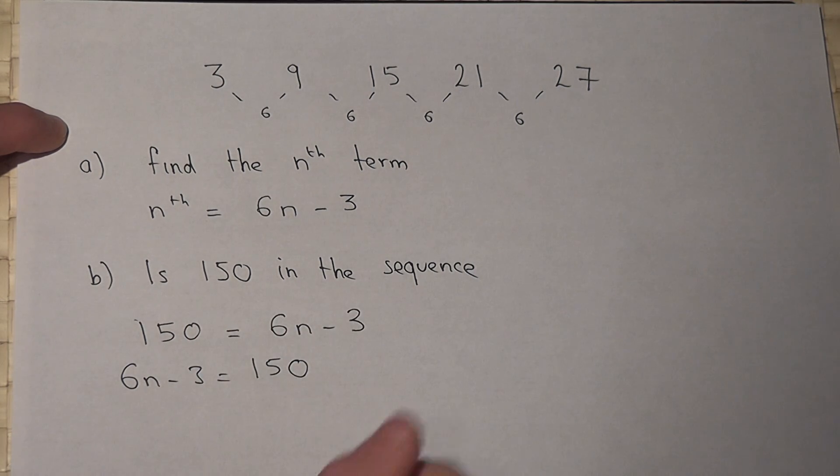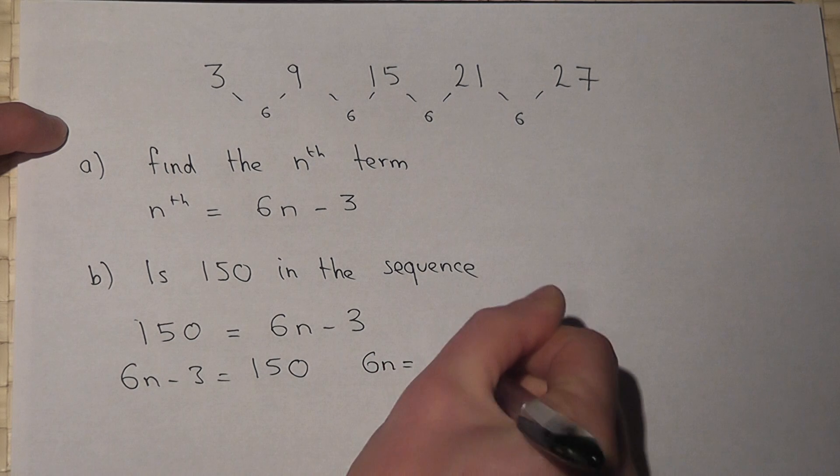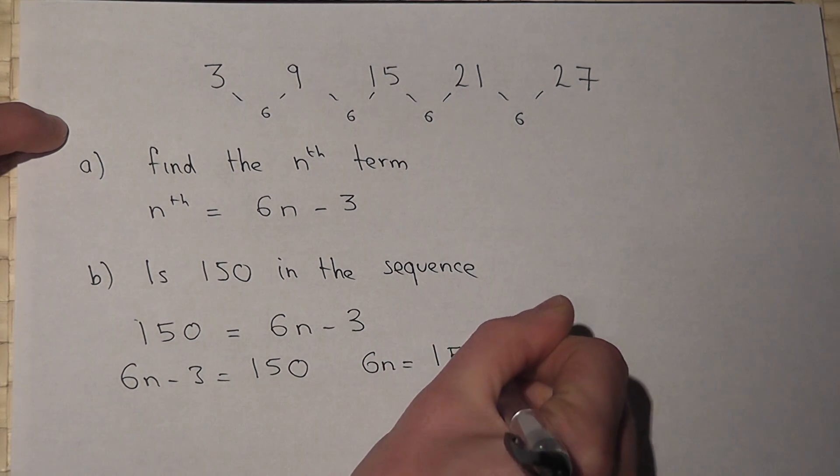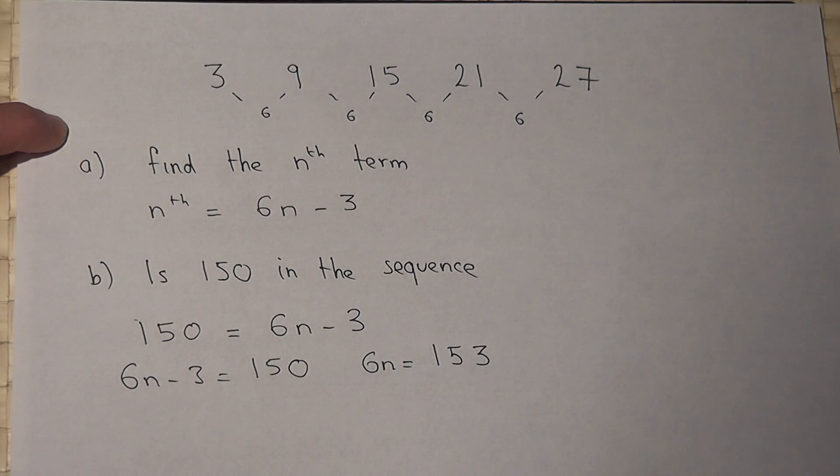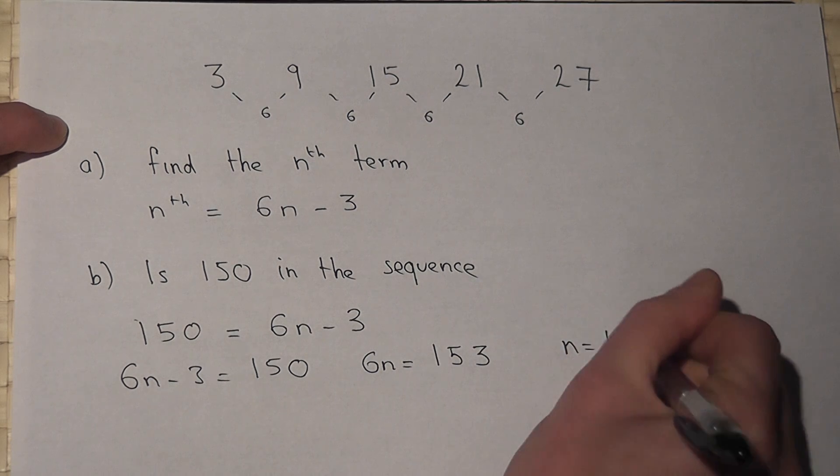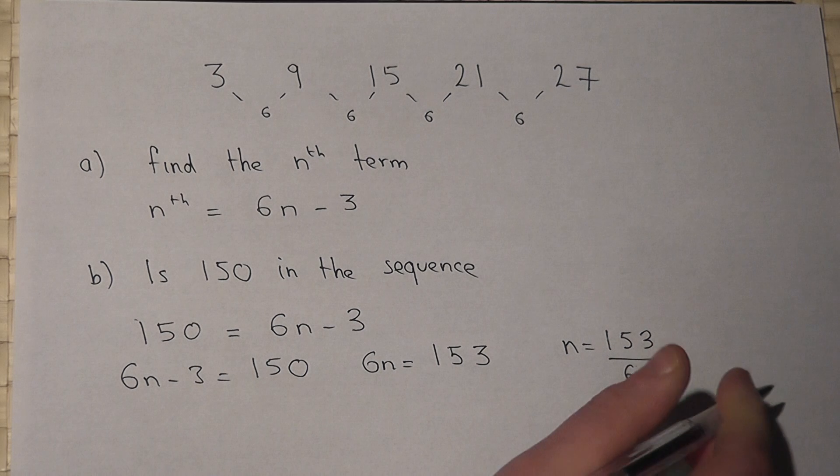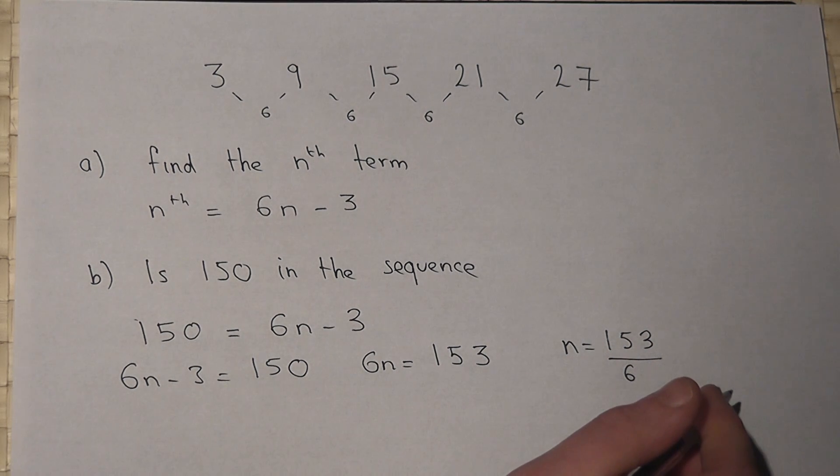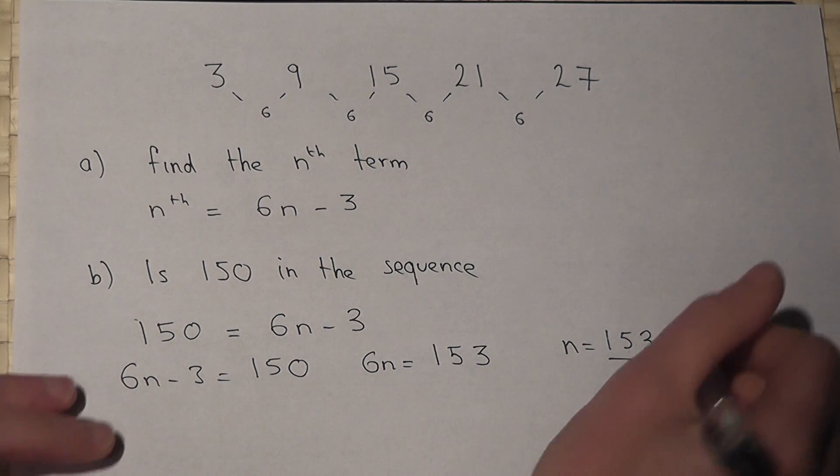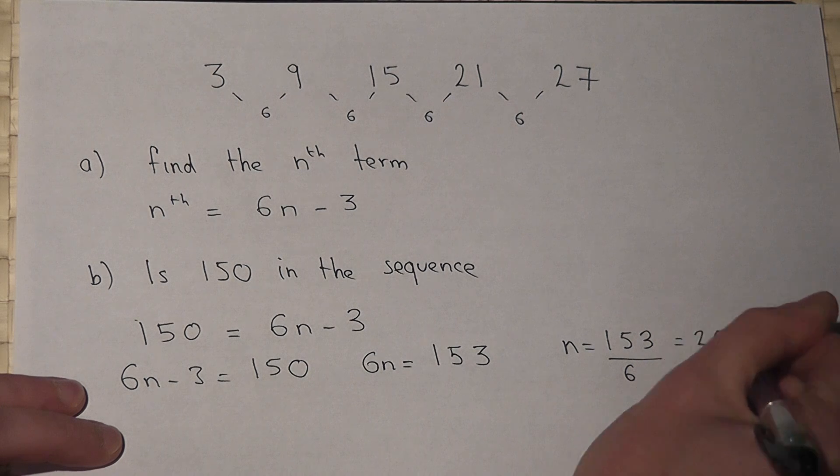If I add across 3, I get 6n is 153. So n would have to be 153 divided by 6. But if we try to work out that as a calculation, then we don't get a whole number. We get 25.5.